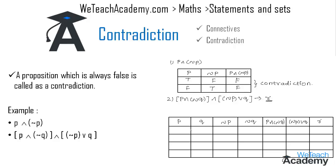If both p and q are true, then not p and not q would both be false. By using the definition of conjunction, p and not q would also be false. By using the definition of disjunction, not p or q would be true. Therefore in the last column, the truth value of r would be false.